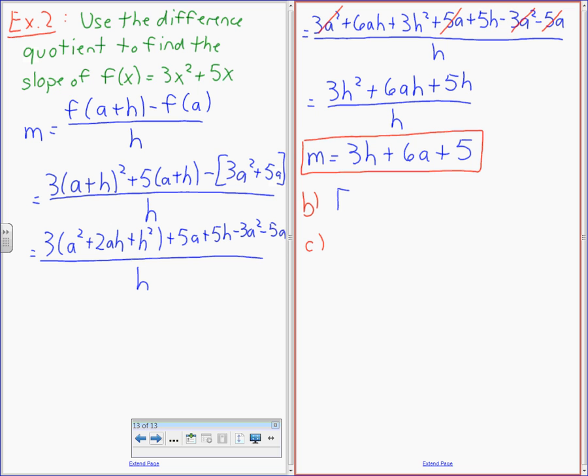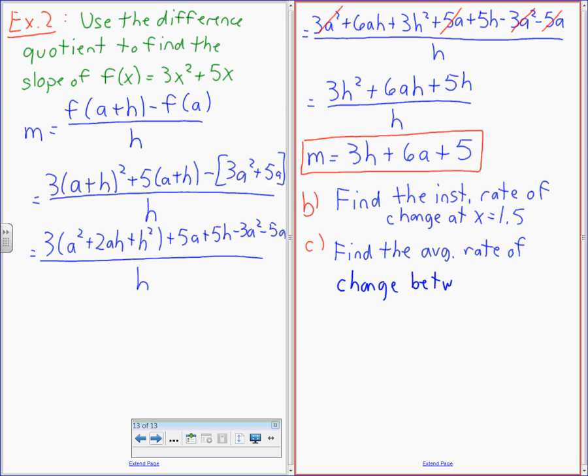Part B is going to be find the instantaneous rate of change at x equals 1.5. And then find the average rate of change between x equals 1 and x equals 2. Now, you guys are such a nice class. Not one person's upset that Mr. Kemp and Mr. Van Stratten didn't show you this last year, last semester.